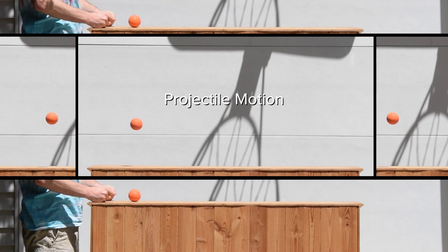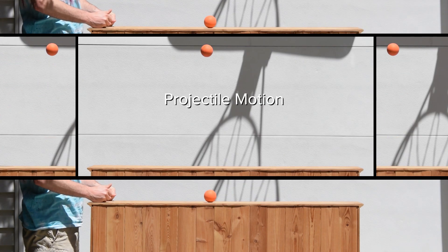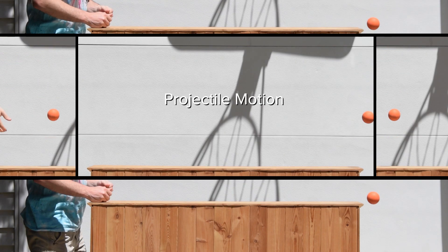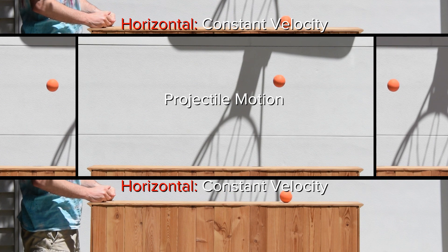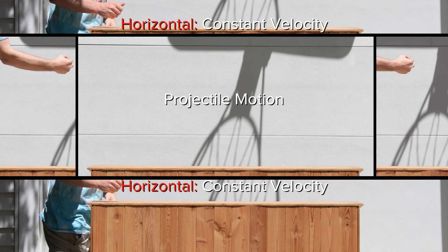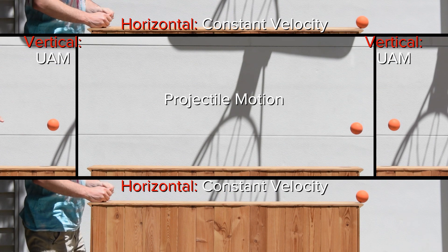Projectile motion is made up of a horizontal and a vertical component. The horizontal component is constant velocity, and the vertical component is uniformly accelerated motion with a downward acceleration that has a magnitude of 9.81 meters per second squared. Now let's combine them all. Notice how the x direction has a constant velocity and the y direction has a uniform downward acceleration.